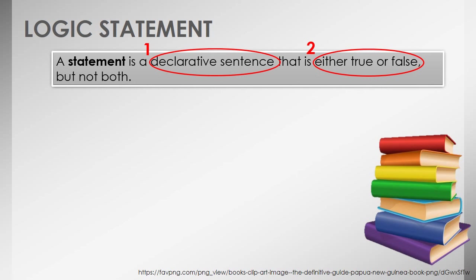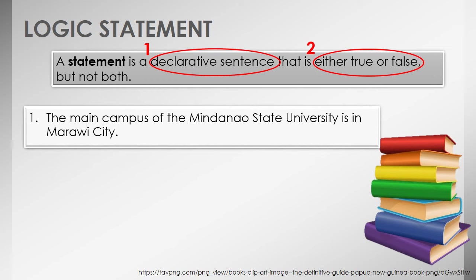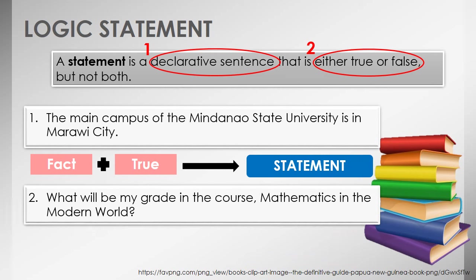To understand it clearly, we have the following illustrations. First, 'The main campus of the Mindanao State University is in Marawi City.' This is a fact, hence a declarative sentence. Furthermore, this is true. Since both conditions are satisfied, this is a statement. Second, 'What will be my grade in Mathematics in the Modern World?' — this is an interrogative sentence. Since the first condition is not satisfied, this is not a statement. Third, 'Open the door.' A command is expressed, hence this is an imperative sentence and therefore not a statement.